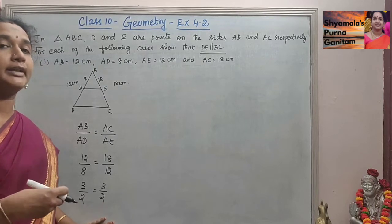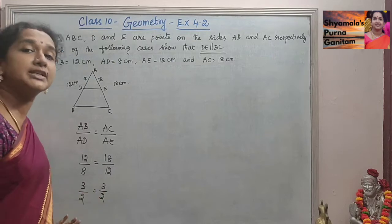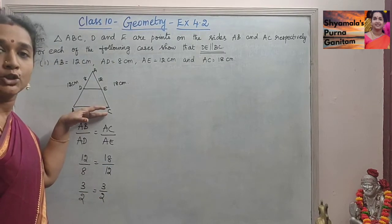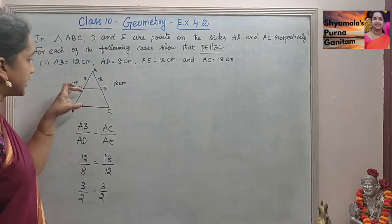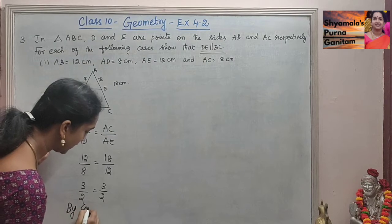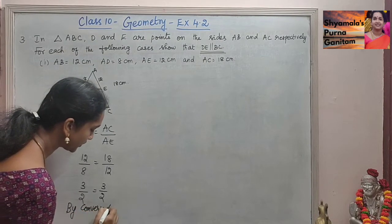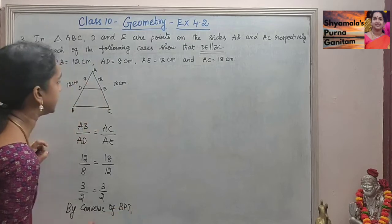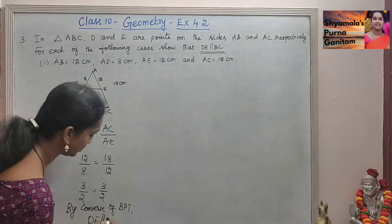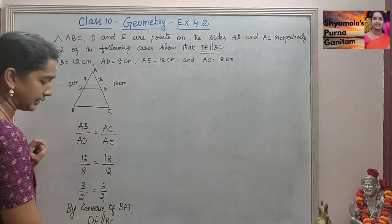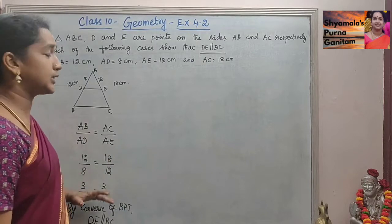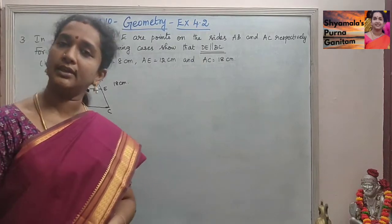So by the converse of the basic proportionality theorem, since the sides are proportional, we can say that DE is parallel to BC. By the converse of BPT, these two sides are parallel. Thank you.